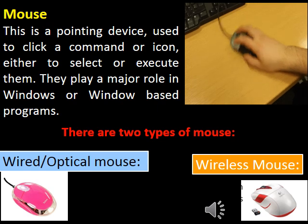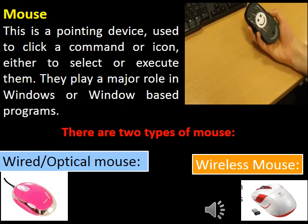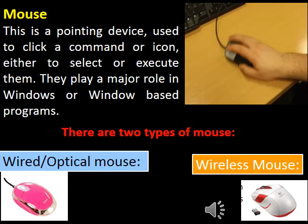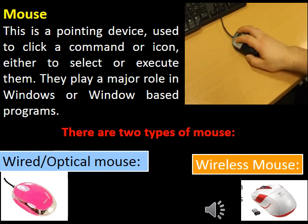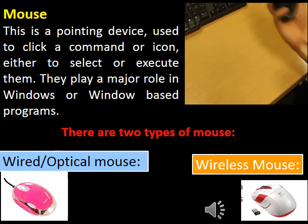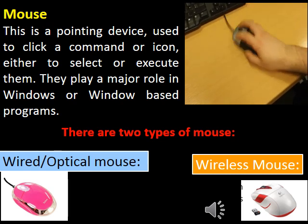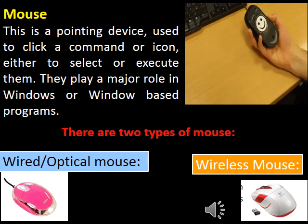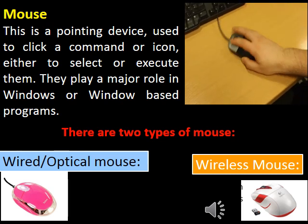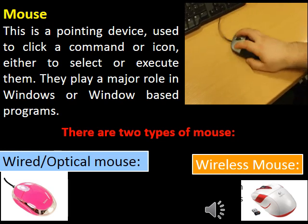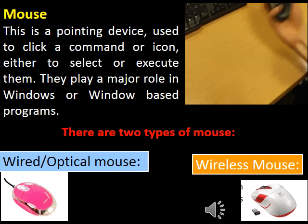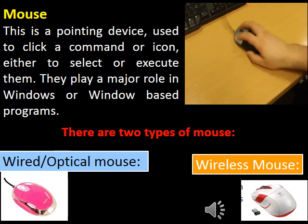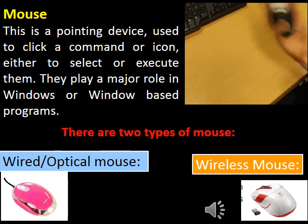The second input device is the mouse. This is a pointing device used to click a command or icon either to select or execute them. They play a major role in Windows or window-based programs. There are two types of mouse: first, wired optical mouse; second, wireless mouse.